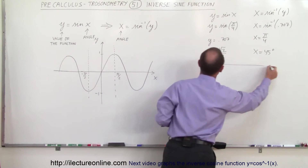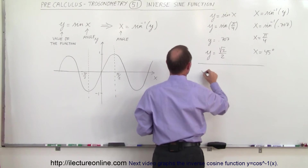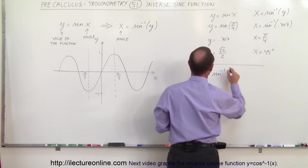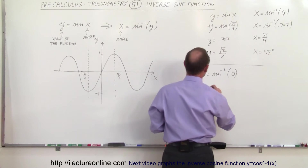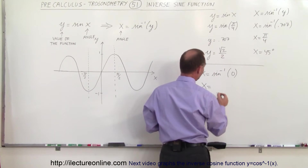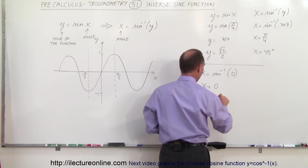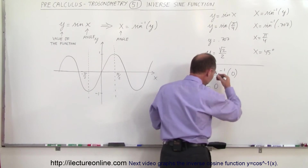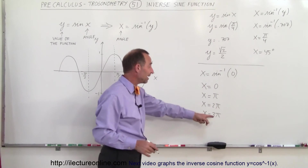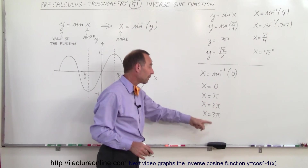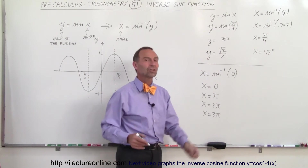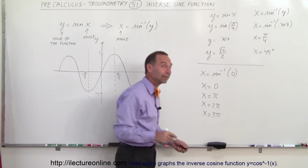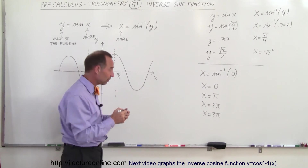Here's another example. If I take x equal to the arc sine — sometimes called the inverse sine — of 0, then x can be equal to 0, or pi, or 2 pi, or 3 pi. There's an infinite number of answers; we can just keep going. For every angle pi, 2 pi, 3 pi, 4 pi, and so forth, the sine of that angle is equal to 0. So that's how we do things in reverse — you give me the answer and I give you the possible angle. In this case, there's an infinite number of possibilities.